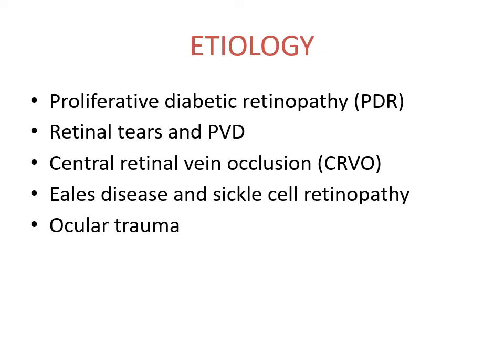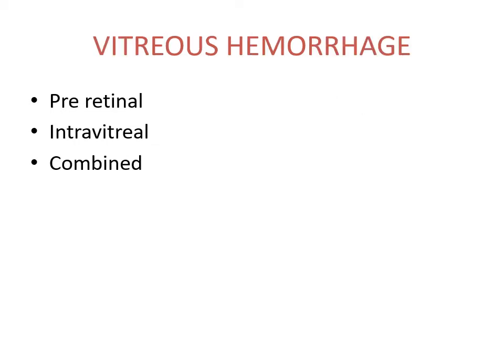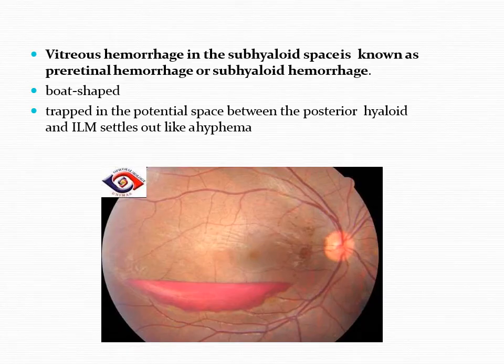The etiology or causes of vitreous hemorrhage include proliferative diabetic retinopathy. When vitreous hemorrhage is present in PDR, it is usually indicating high-risk PDR or advanced eye disease. Secondly, retinal tears and posterior vitreous detachment, then central retinal vein occlusion or CRVO, Eales' disease, sickle cell retinopathy, and also commonly following ocular trauma. Vitreous hemorrhage can be pre-retinal hemorrhage, intravitreal hemorrhage, or a combination.